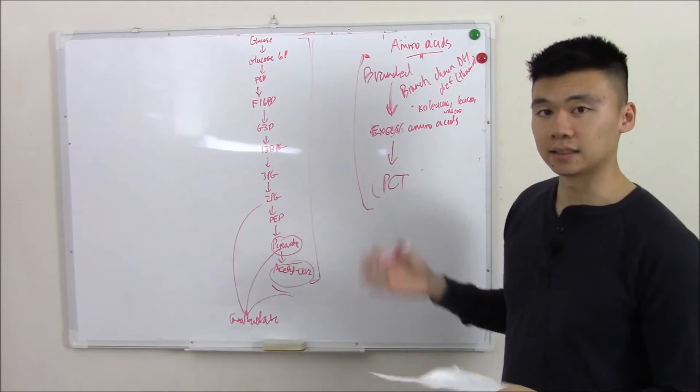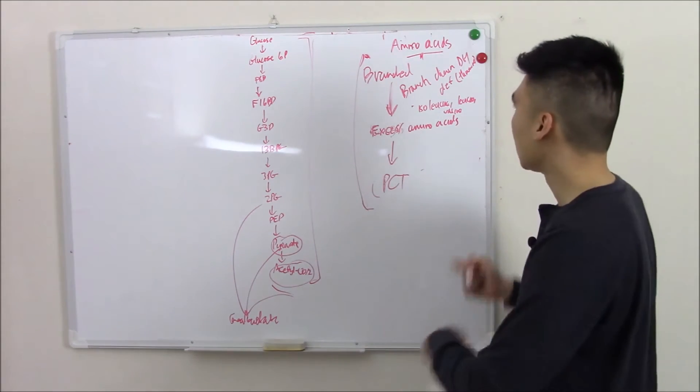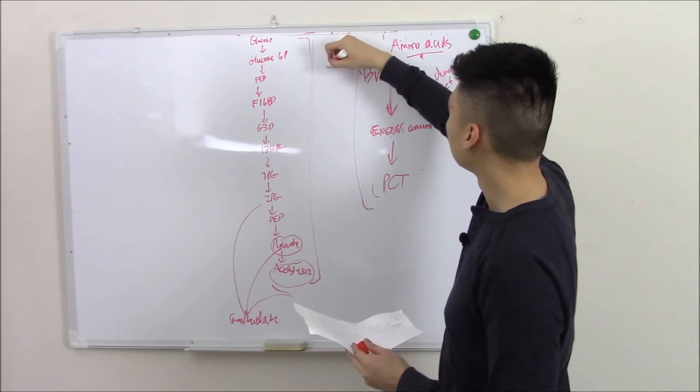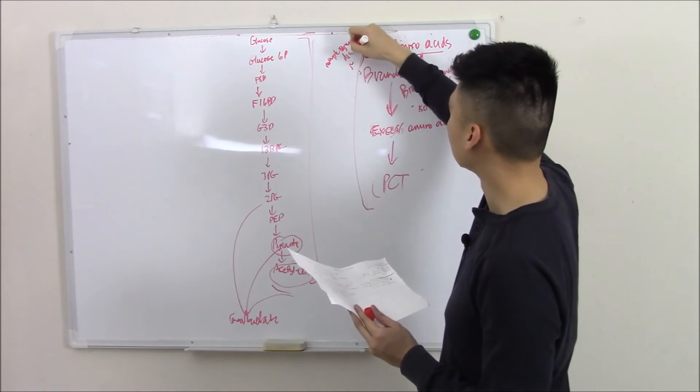So this usually presents in kids. They'll present with vomiting. The urine will smell like maple syrup. And this is actually called maple syrup disease.